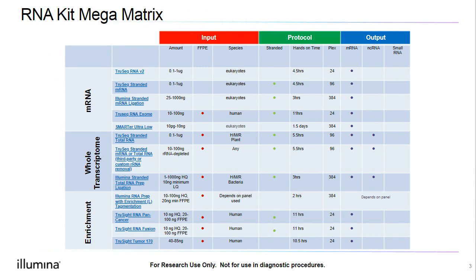In part one, we discussed the different kit options for RNA sequencing and went over the RNA library prep workflows. As a reminder, here is our RNA kit mega matrix from part one, which provides a comparison of the kits we discussed. Continuing on from this, after we've completed our selected workflow, we need to understand what a successful library prep looks like.